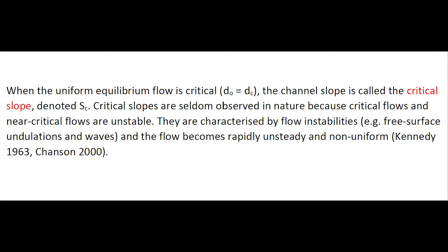When the uniform equilibrium flow is critical, the channel slope is called the critical slope. Critical slopes are rarely observed in nature, because critical flow and near-critical flow are unstable. They are characterized by flow instabilities, free-surface and dilution waves, and the flow becomes rapidly unsteady or non-uniform.